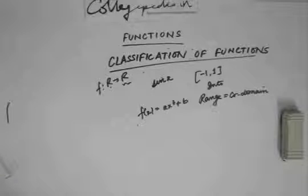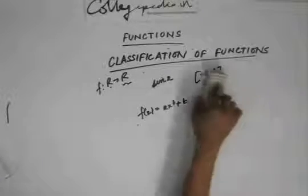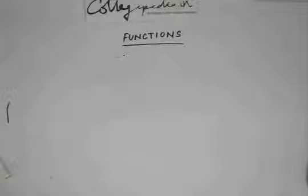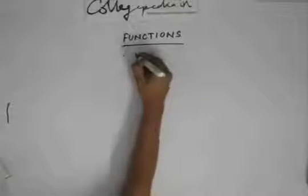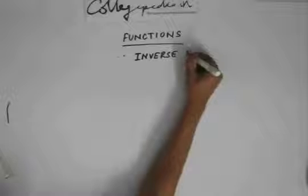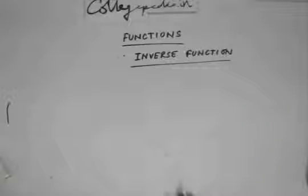To determine whether a function is into or onto, we find the range and compare it with the co-domain. If both are the same, it's an onto function; if they are not the same, it's an into function. Now we move on to a very important concept — the inverse function.